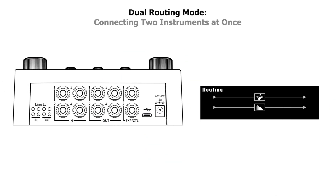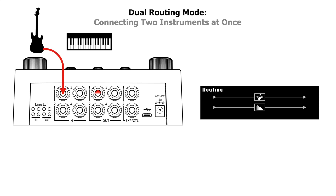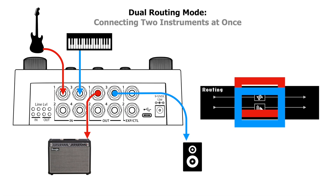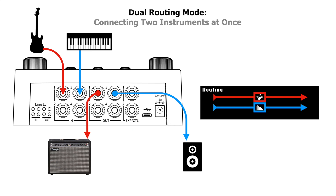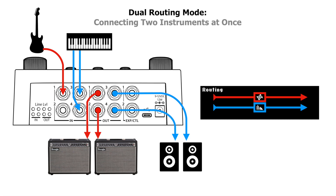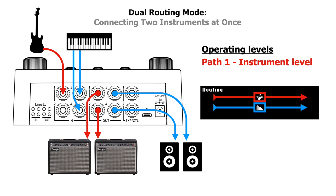For example, to connect a guitar and a keyboard to the H90: connect the guitar to path 1, which flows from in 1 to out 1. For the keyboard in mono, use path 2, which flows from in 3 to out 3. Each path gets its own effects algorithm. It's also possible to run each path mono-in and stereo-out by adding a cable from out 2 to another guitar amp and from out 4 to the PA. One key thing to keep in mind is matching the operating level — path 1's I/O should be set to instrument level for the guitar signal, and path 2 should be set to line level for the keyboard.